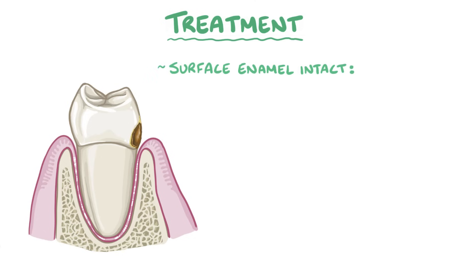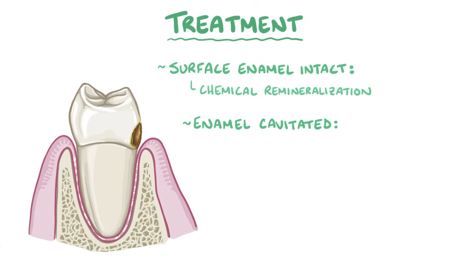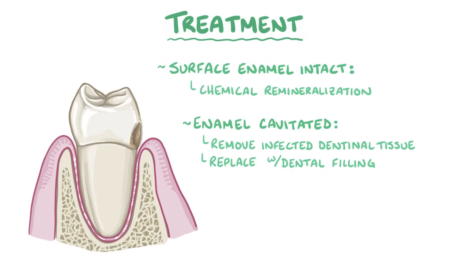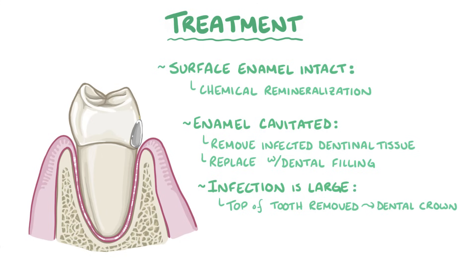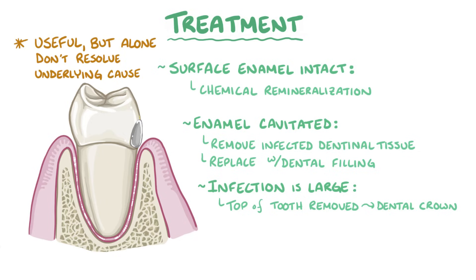If the enamel surface is intact, then the caries lesion can be treated without drilling a tooth, and instead you can use chemical remineralization. Once the enamel surface is fully cavitated to the dentin, the bacteria have a pathway to enter the dentin, and it might be necessary to remove the infected dentinal tissue and replace it with a dental filling, which allows the tooth to chew. If the infection is so large that the entire top of the tooth needs to be removed, a dental crown can be used to replace it. Ultimately, these restorative treatments are useful, but they alone don't resolve the underlying cause of the caries lesion and can't prevent new caries lesions from forming.